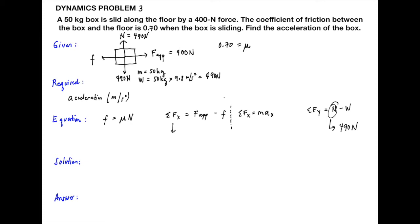Problem 5: A force of 300 Newton pushes a 40 kilogram box starting from rest. The box achieves a velocity of 4 meter per second in a time of 2.5 seconds. Find the coefficient of kinetic friction between the box and the floor. We draw the free body diagram. The applied force is 300 Newton at 50 degrees.